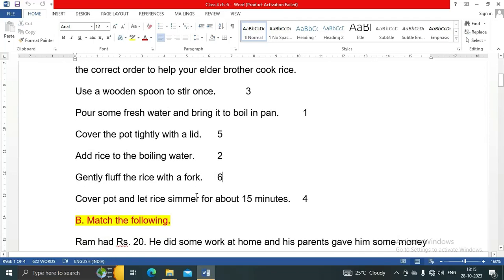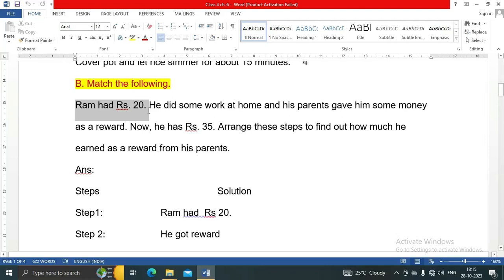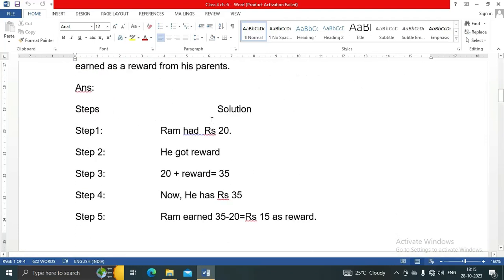Next, match the following. Ram has rupees 20. He did some work at home and his parents gave him some money as a reward. Now he has 35. Arrange these steps to find out how much he earned as a reward from his parents. Step one: Ram had rupees 20. Step two: He got reward. Step three: 20 plus reward equals 35. Step four: Now he has 35. Step five: Ram earned 35 minus 20 equals 15 as reward.